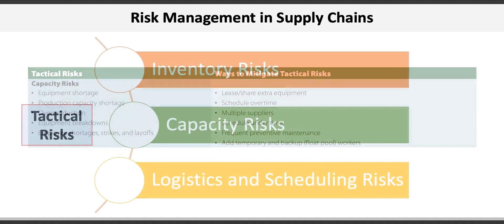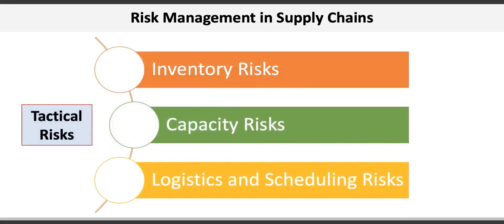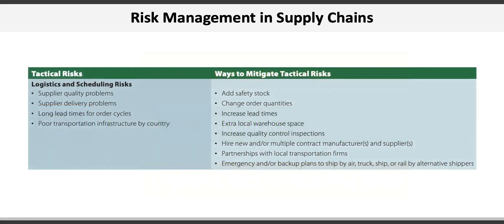The third tactical risk is logistics and scheduling risk. Examples include supplier quality and delivery problems or long lead times. Ways to mitigate these risks include adding safety stock, increasing lead times, or partnering with local transportation firms.